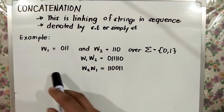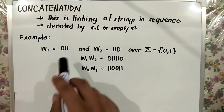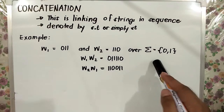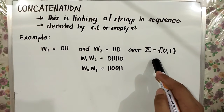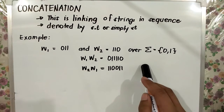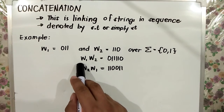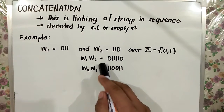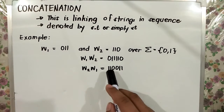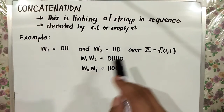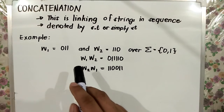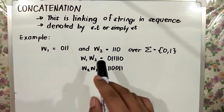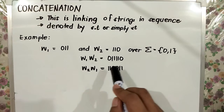For example, String 1 equals 011 and String 2 equals 110 over a binary alphabet. String 1 concatenated with String 2 equals 011110. So String 1 (011) and String 2 (110) form the string 011110.